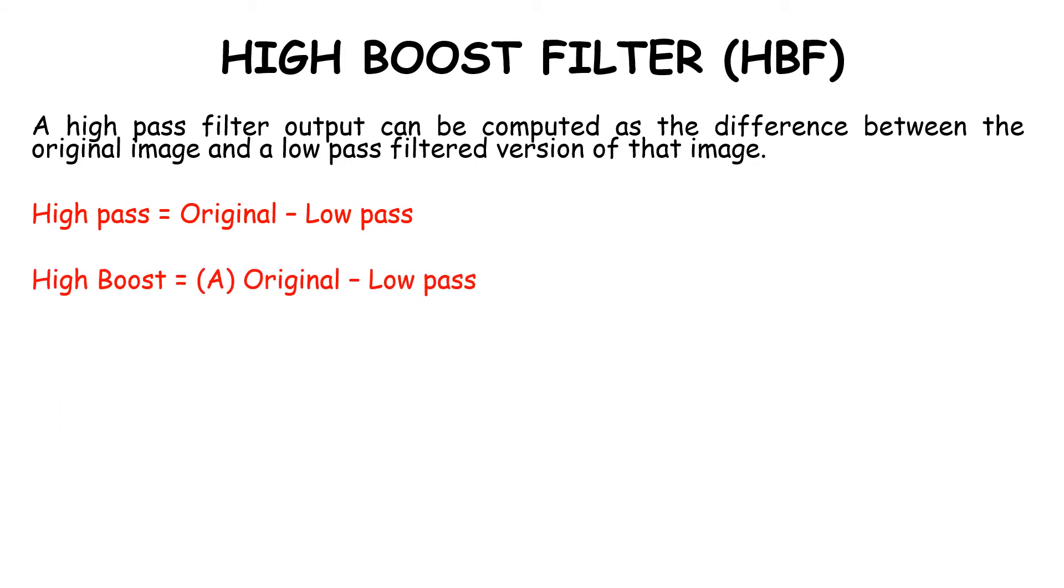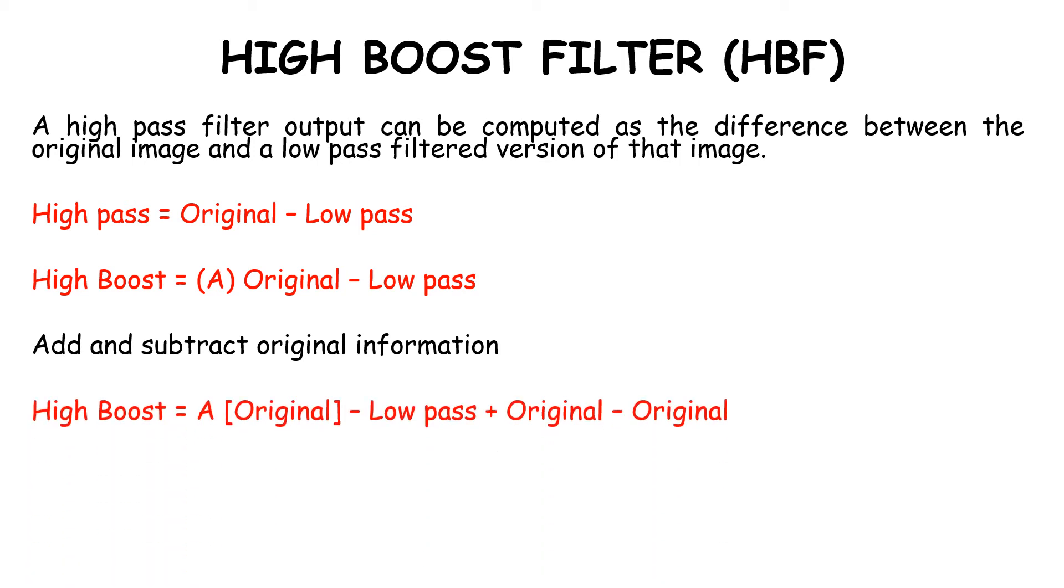High boost = A(Original) - Low pass. If we add and subtract the original image, we get: High boost = A(Original) - Low pass + Original - Original. Here, A provides the definition of the high boost or high frequency signal.